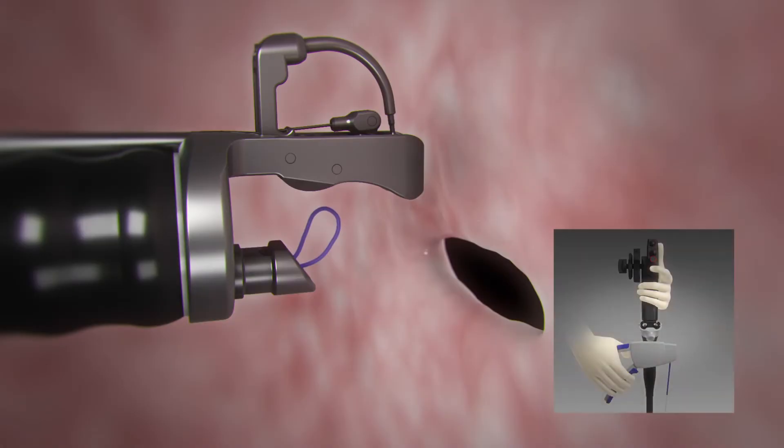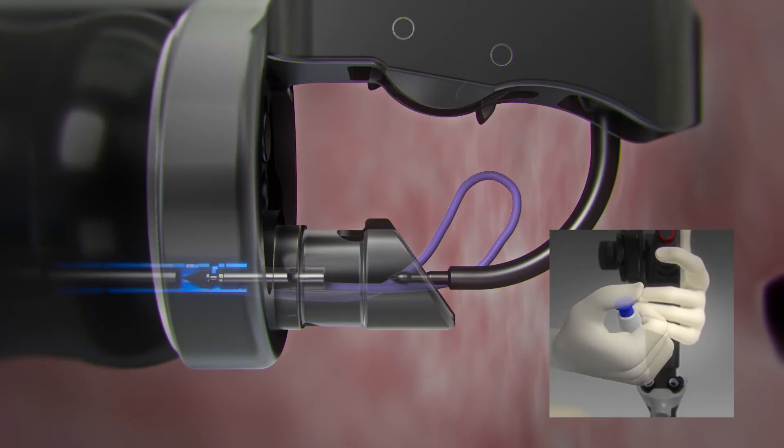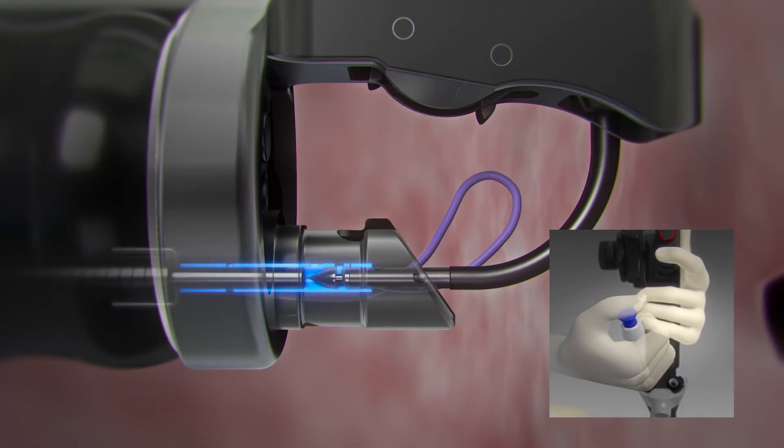Prepare to load the needle body by closing the needle driver handle. Advance the anchor exchange catheter until the anchor clicks onto the needle body and will not advance further.